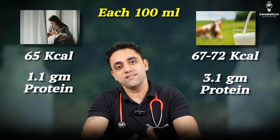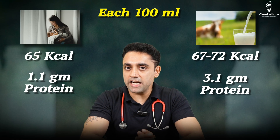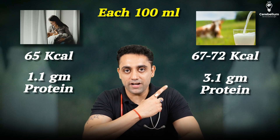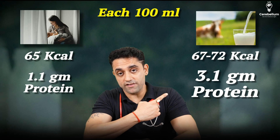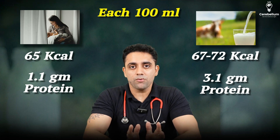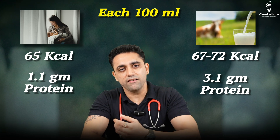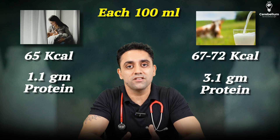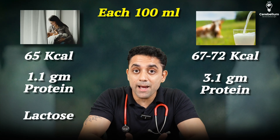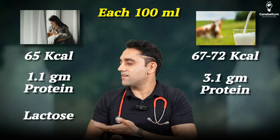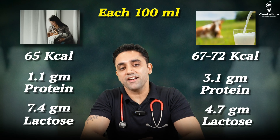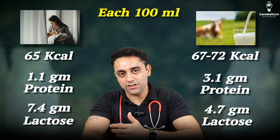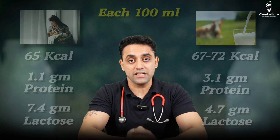This was a previous year question: what is three times more in cow's milk than breast milk? The answer is protein. Now, breast milk is rich in lactose — that's an exam question. Breast milk is deficient in everything except lactose. Remember: 7.4 and 4.7 — each 100 ml of breast milk contains 7.4 gram of lactose, and cow's milk contains 4.7 gram of lactose.